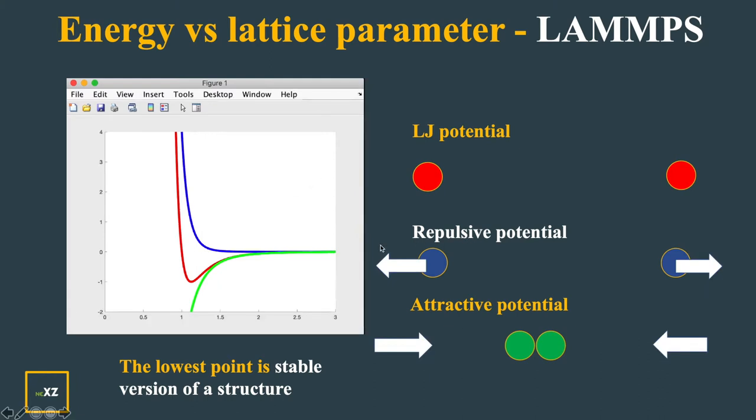The repulsive potential part increases the energy and the attractive potential part decreases the energy and the sum of these two gives us the LJ potential which has a stable point of the structure. If the spacing is more than this, the structure energy increases and if the spacing is less than this spacing, the structure increases more rapidly.